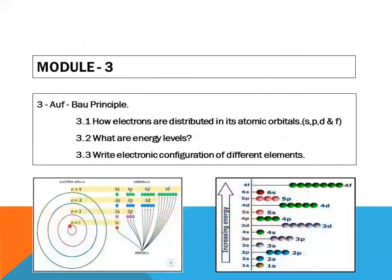Module number three. All the course is based on the Aufbau principle. In module number three, we know what is the Aufbau principle. And this module is consisting of three subdivisions. In first, we will be doing how electrons are distributed in its atomic orbits.